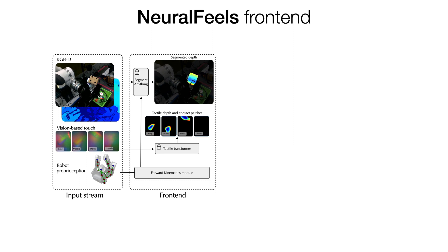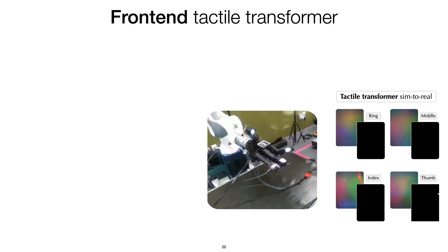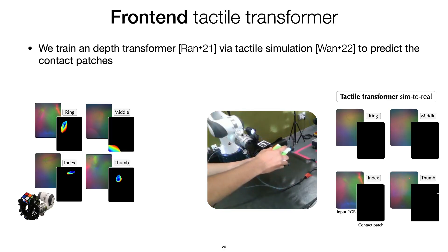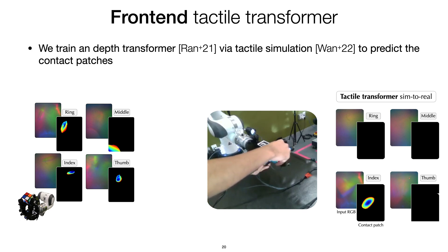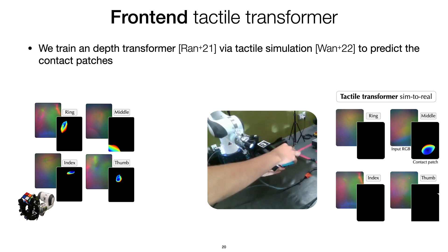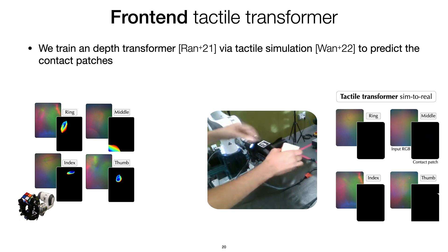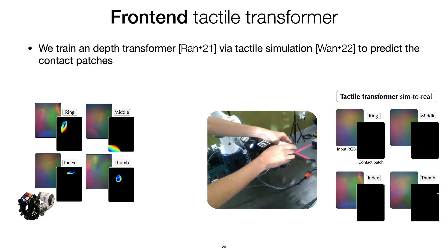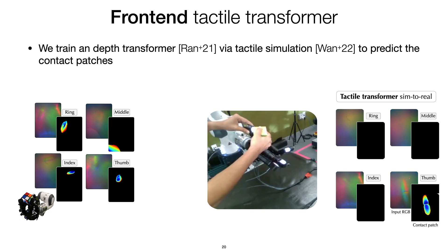We now need analogous segmented depth information for the tactile images, so we train our own supervised monocular depth network for this. Our tactile transformer network, which is a ViT, can generate both contact depth information and identify contact and non-contact regions, such as in this example where we are manipulating a cube on the fingers of the robot. It is a monocular depth network trained entirely in simulation with tactile data and generalizes to real-world interactions. Please look through our manuscript for more details on training and augmentation.